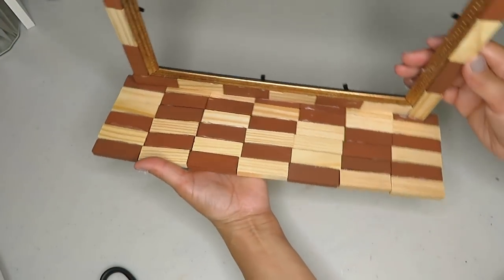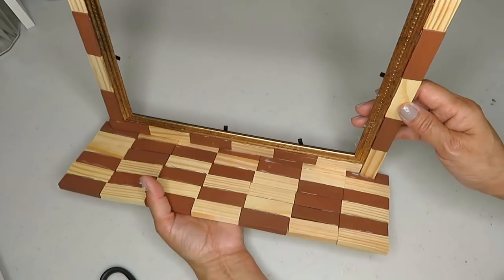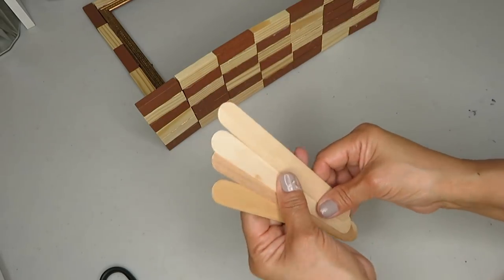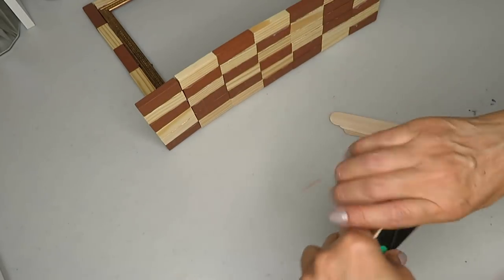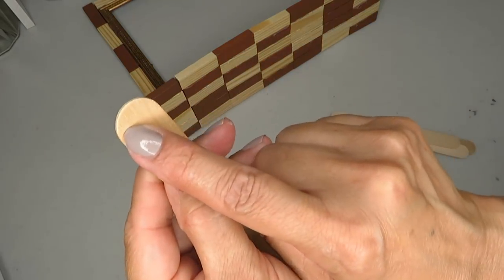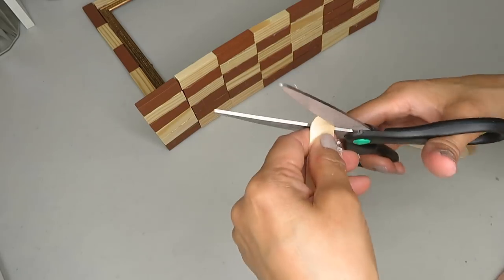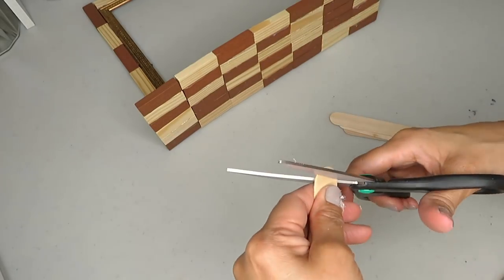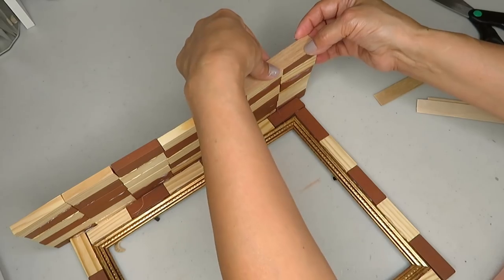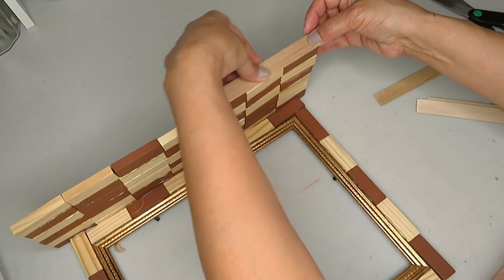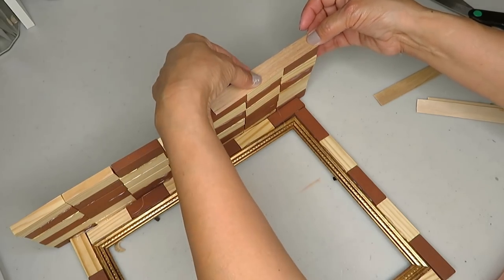For the trimming I'm gonna be using some popsicle sticks. I'm gonna get my scissors and cut the edge so I can square them off. Now that I've cut all my popsicle sticks, I'm ready to start hot gluing the trimming.